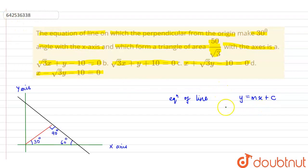So from here, we can say that the intercepts would be: x-intercept would be minus c upon m comma 0, and y-intercept would be 0 comma c.